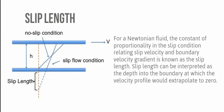To conclude, the constant of proportionality in the slip condition relating slip velocity and boundary velocity gradient is known as the slip length. Slip length can be interpreted as the depth into the boundary at which the velocity profile would extrapolate to zero.